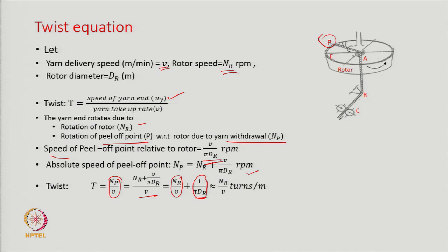For all practical purposes, the twist is N_R/V. The speed of the peripheral point with respect to the rotor is so small that we can ignore it and still find the twist which is reasonably accurate. In industry, we find out twist by taking the ratio of rotor speed to delivery rate.